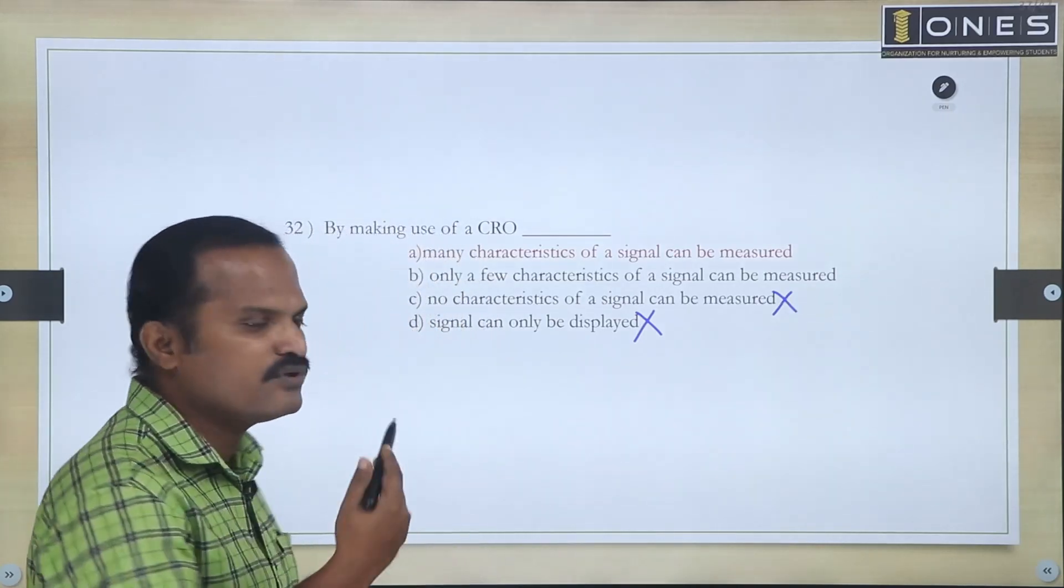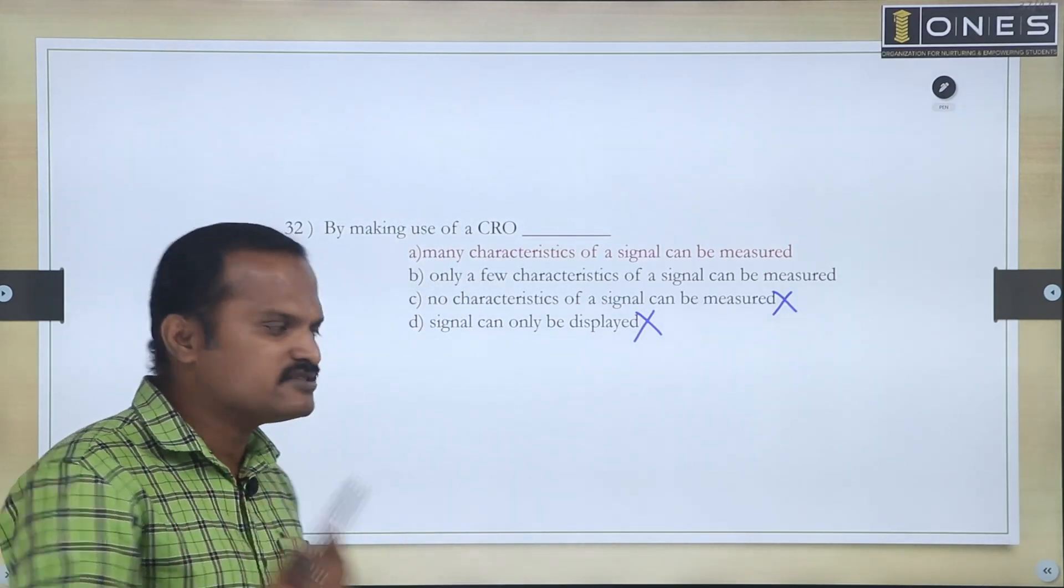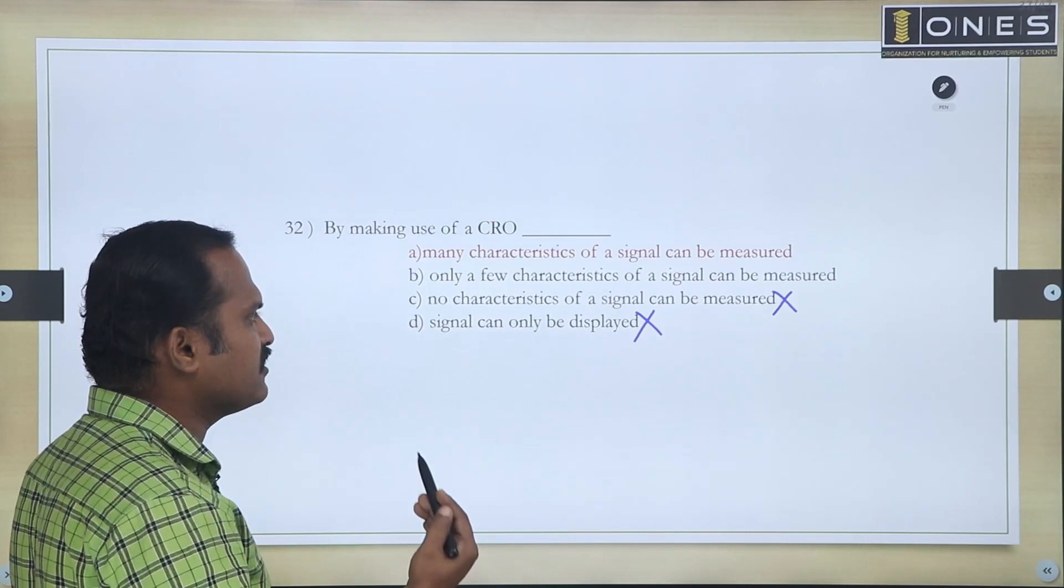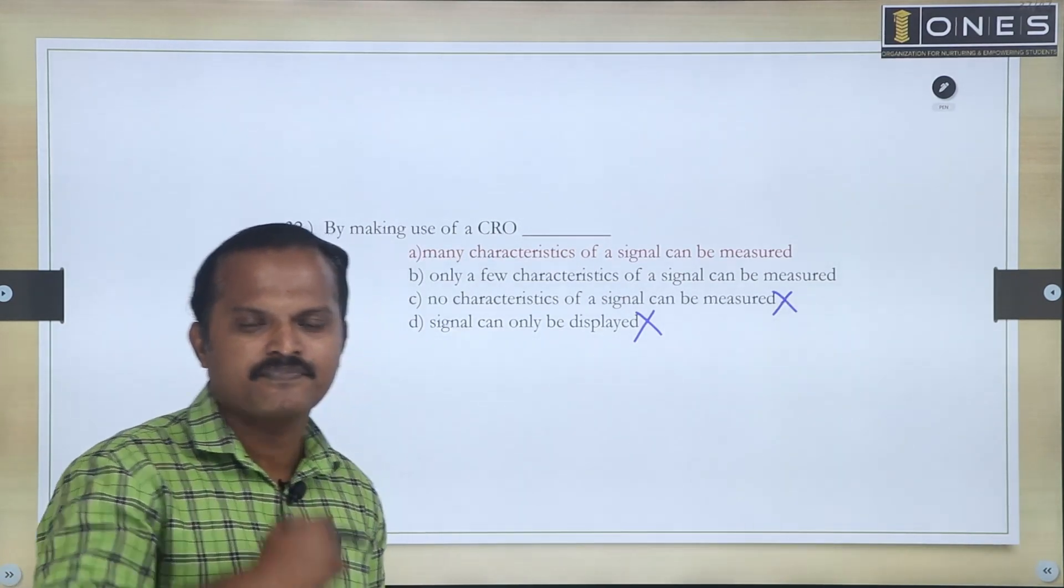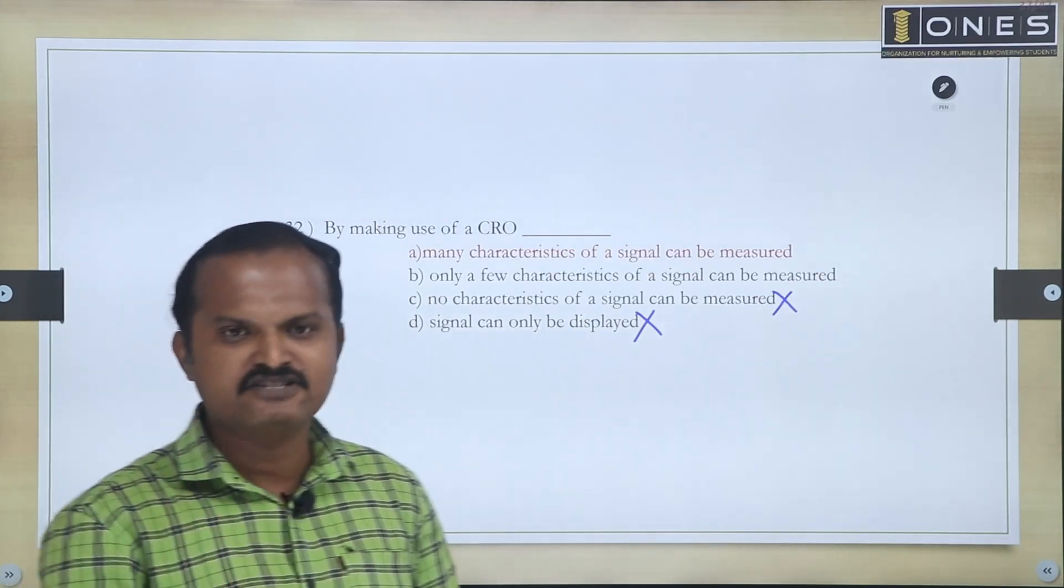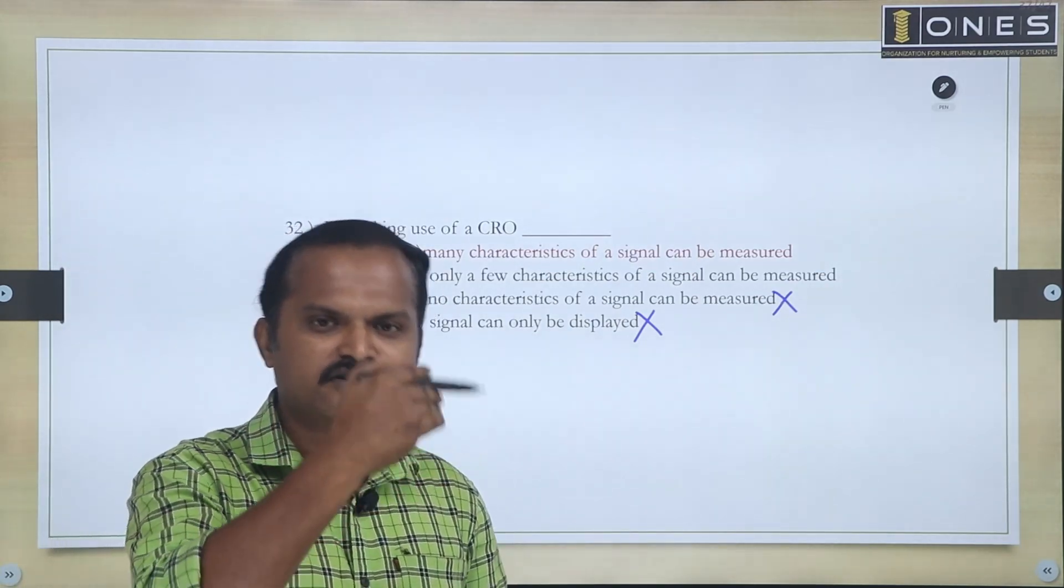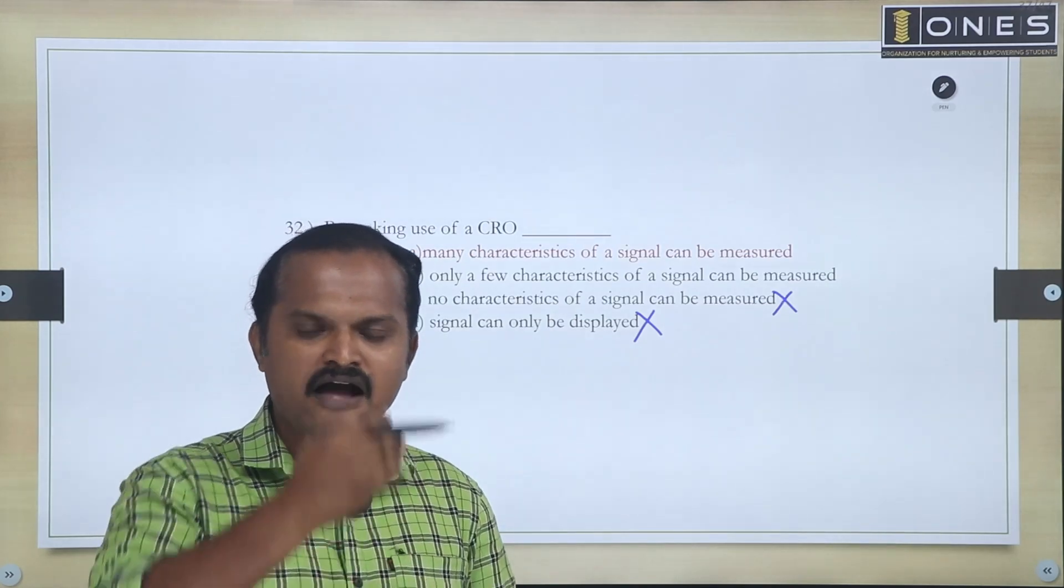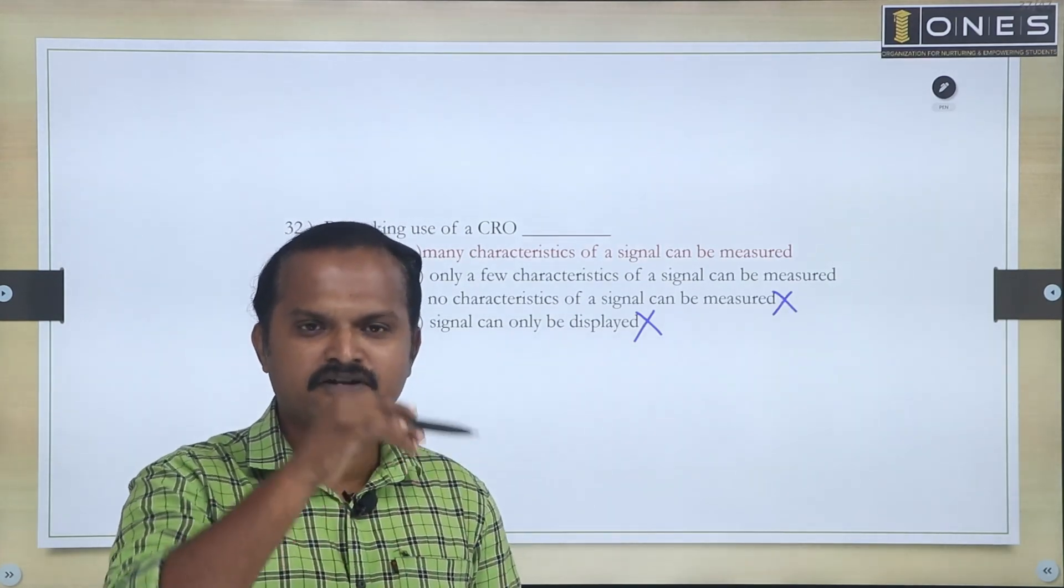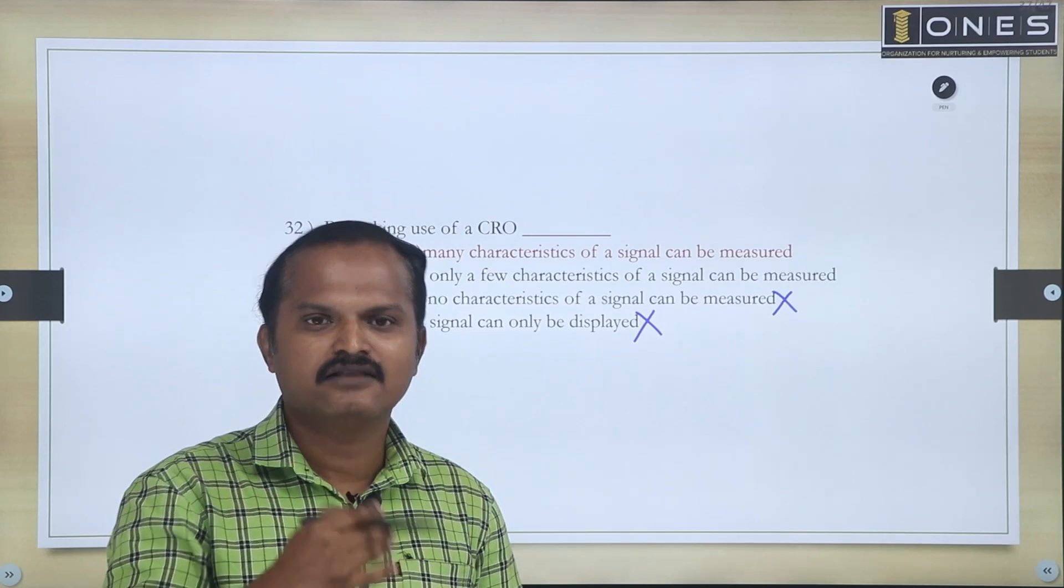All the characteristics are measured, not just few characteristics. Using CRO, that particular signal, we have several characteristics to measure. Comparison, peak, positive peak, negative peak. Then total time period, frequency parameter from time period, amplitude, voltage parameters, current parameters, we can do that.